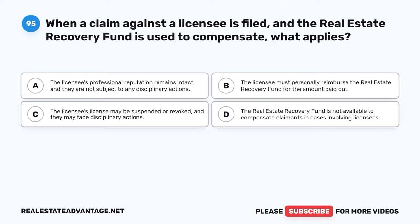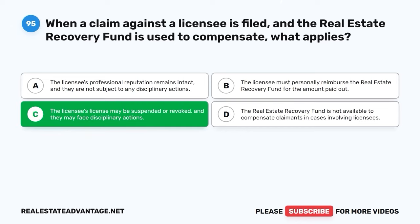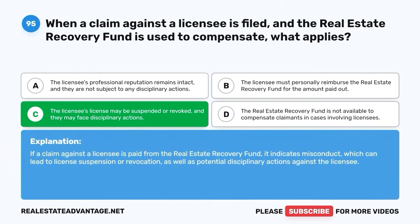Question 95. When a claim against a licensee is filed and the real estate recovery fund is used to compensate, what applies? A. The licensee's professional reputation remains intact and they are not subject to any disciplinary actions. B. The licensee must personally reimburse the real estate recovery fund for the amount paid out. C. The licensee's license may be suspended or revoked, and they may face disciplinary actions. D. The real estate recovery fund is not available to compensate claimants in cases involving licensees. The correct answer is C: The licensee's license may be suspended or revoked. If a claim against a licensee is paid from the real estate recovery fund, it indicates misconduct, which can lead to license suspension or revocation, as well as potential disciplinary actions.